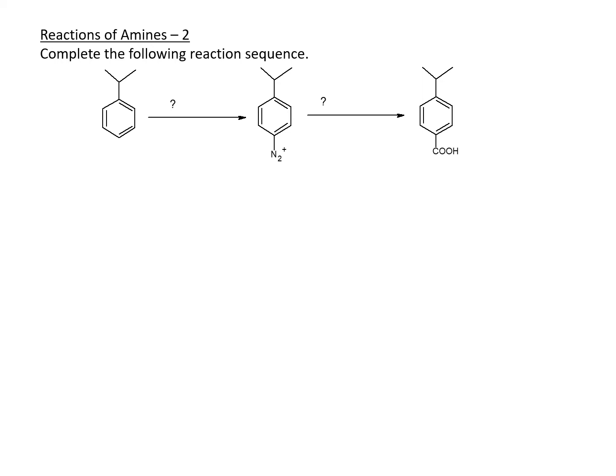One of the most common reactions that we find for amines is the diazotization reactions. Once you form a diazonium salt for an amine, then you can do a whole lot of things on the nitrogen or on the carbon.